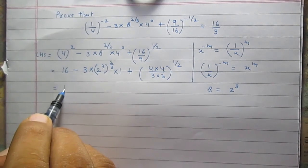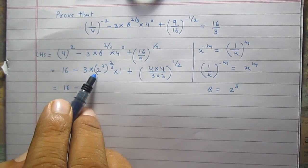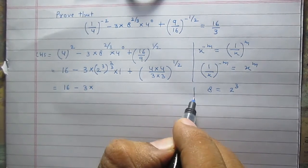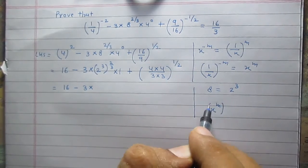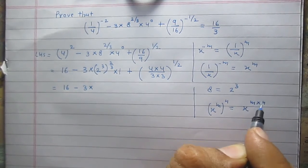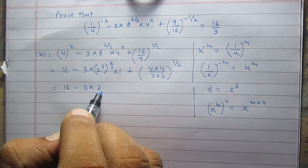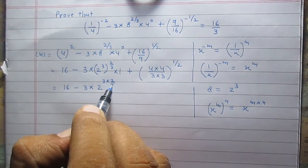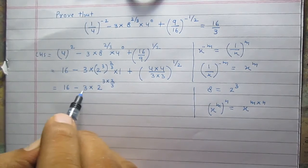We can simplify: 16 minus 3 multiplied by (2 raised to the power 3) raised to the power 2/3. According to the laws of exponents, x raised to the power m, raised to the power n, equals x raised to the power m×n. So 2 raised to the power 3, raised to the power 2/3, becomes 2 raised to the power 3 multiplied by 2/3, which equals 2 raised to the power 2.